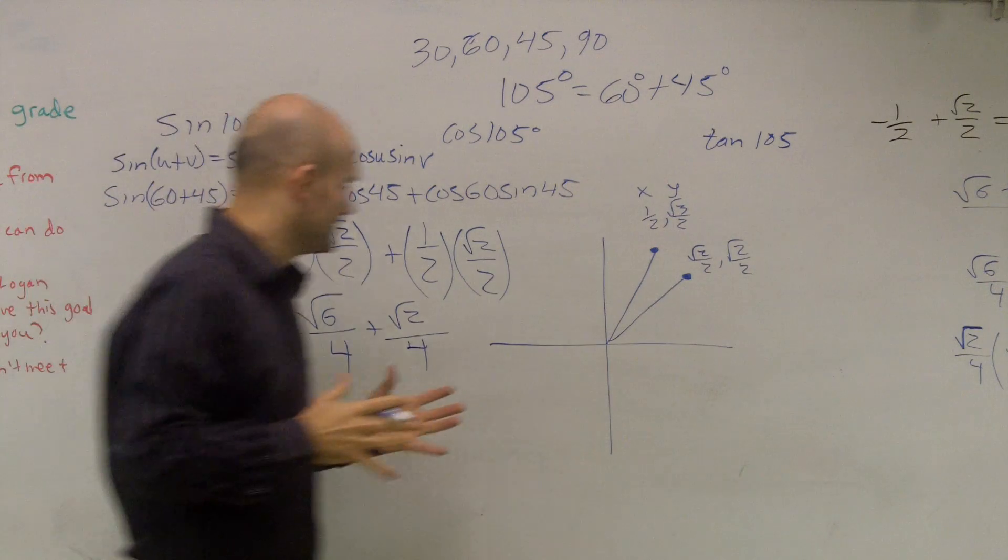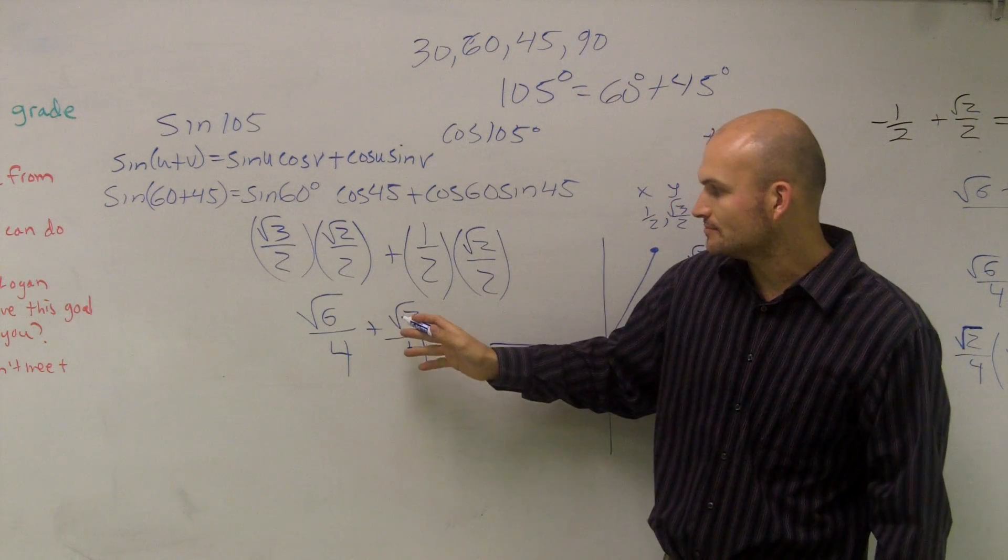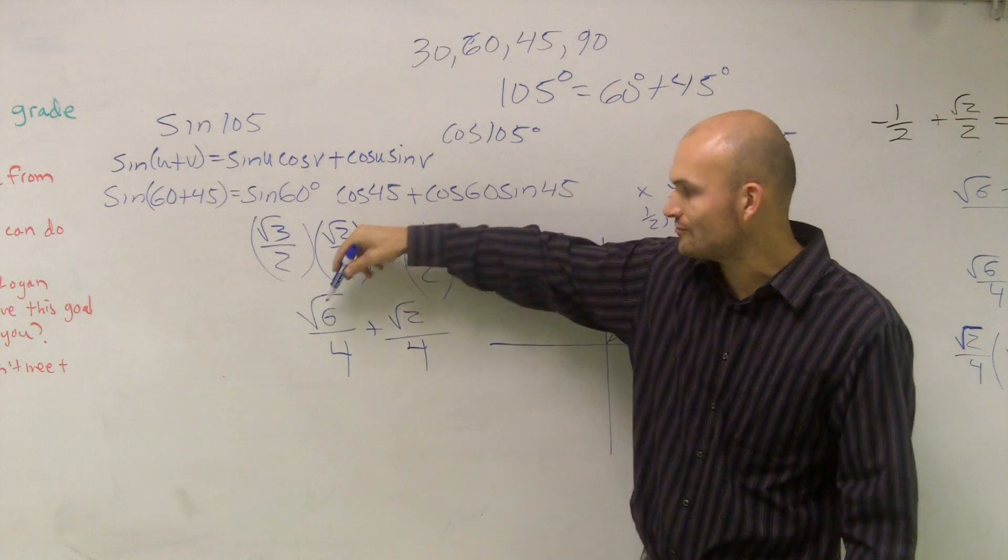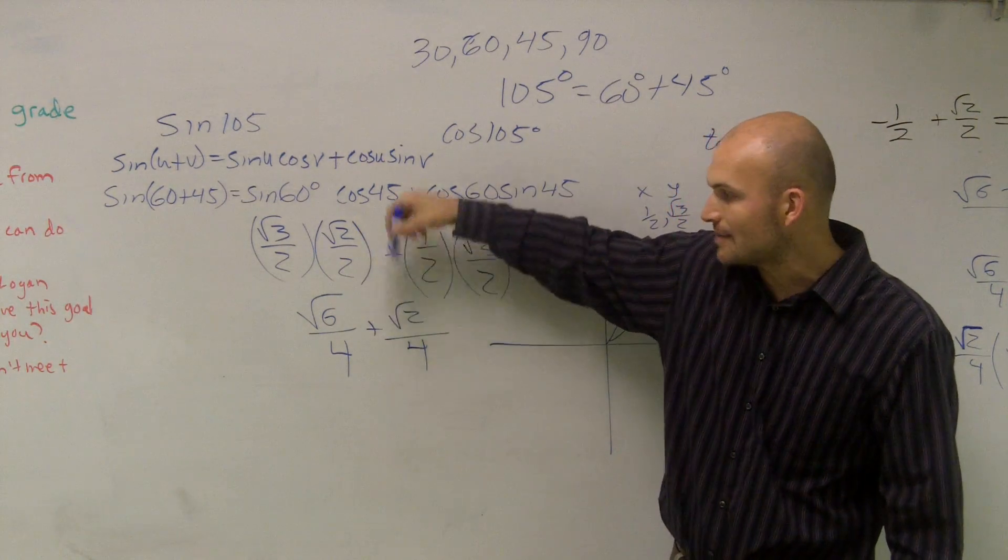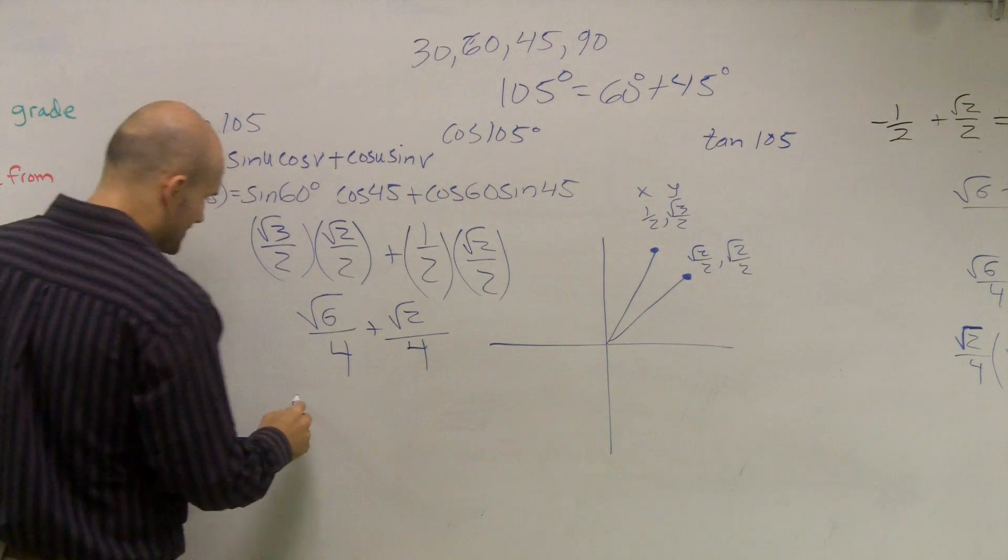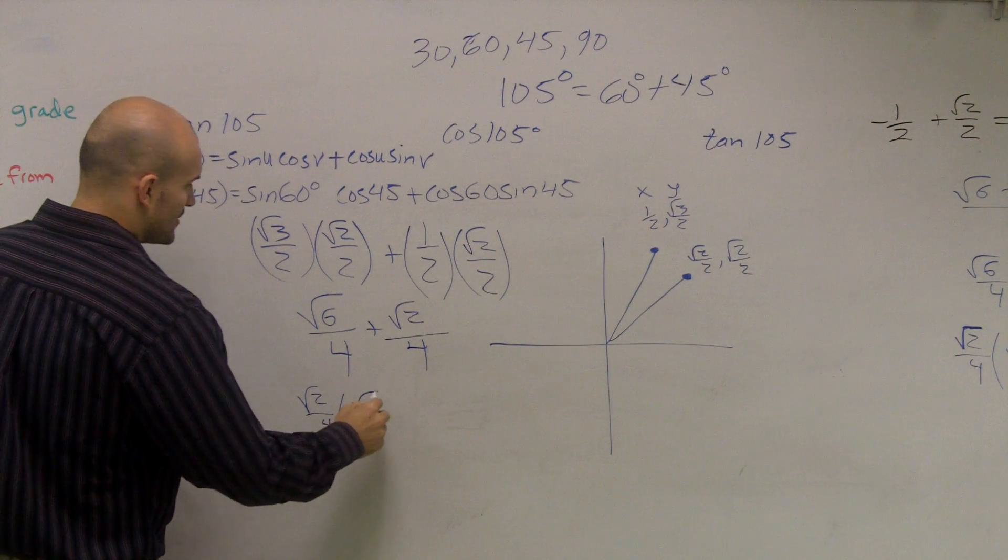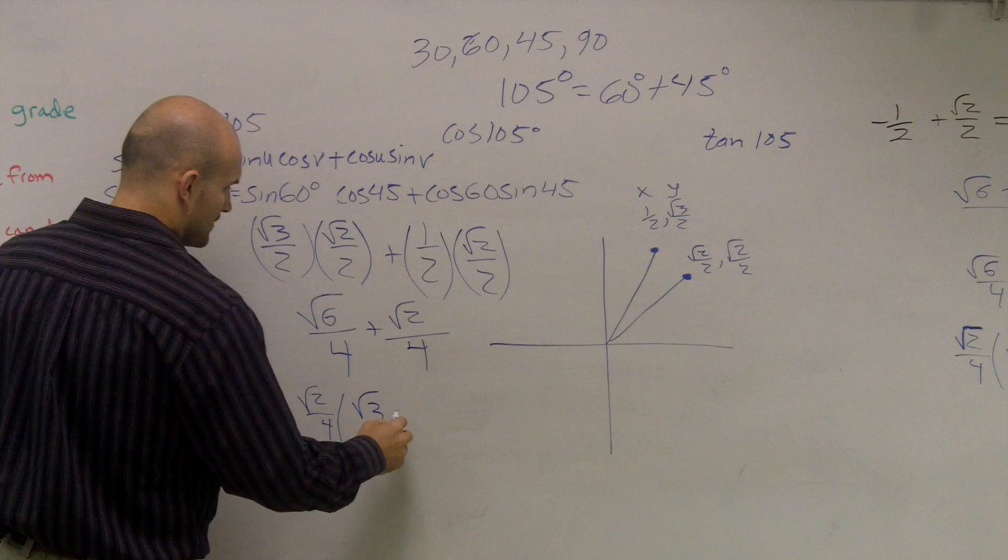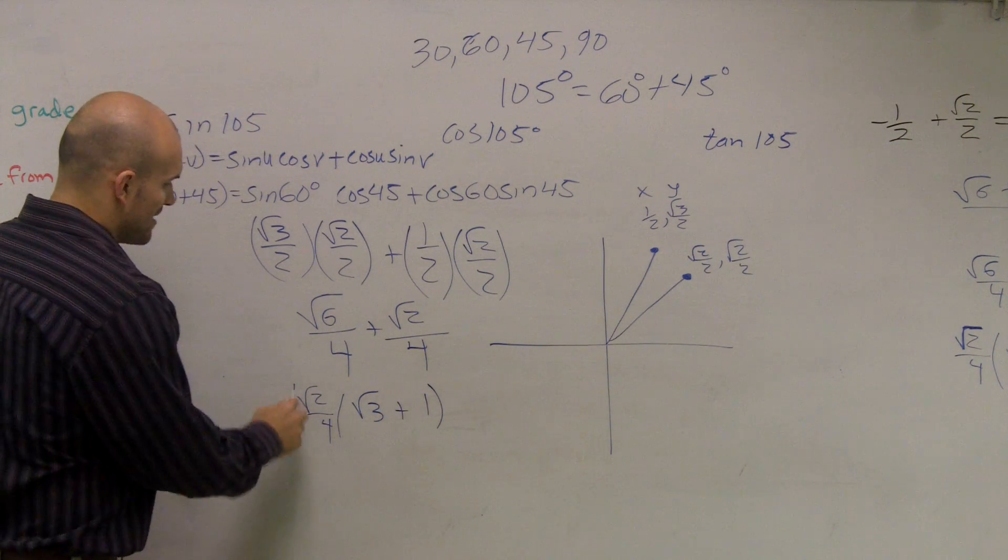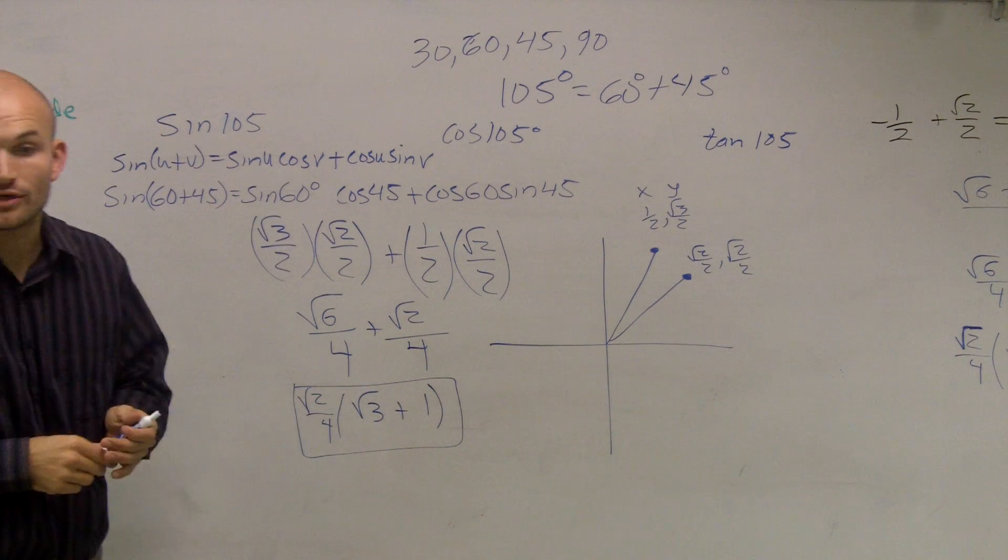So now what we can do is, when we're looking at this, we notice we can combine these, but before we even combine them, we also know we can actually factor out they have the same denominator, and they share a common numerator of radical 2. So what I can do is I can factor out a radical 2 over 4, and that's just going to leave me with a radical 3 plus 1. And that would be my final answer for the sine of 105 degrees.